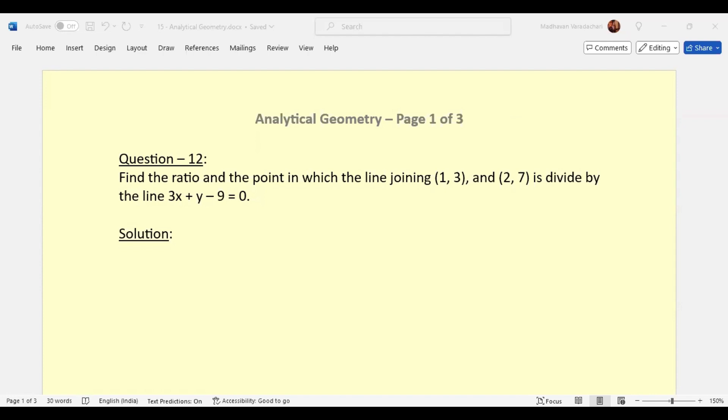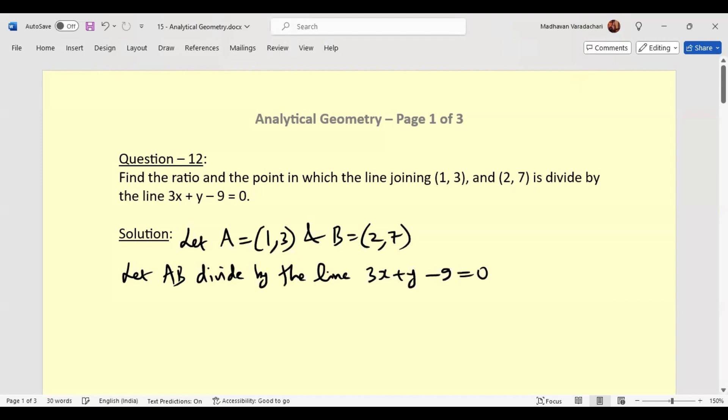First of all, let us consider the points as A and B. Let A equal (1,3) and B equal (2,7). Then this particular line segment which is formed by connecting these two points, that is AB, let AB be divided by the line 3x plus y minus 9 equal to 0.